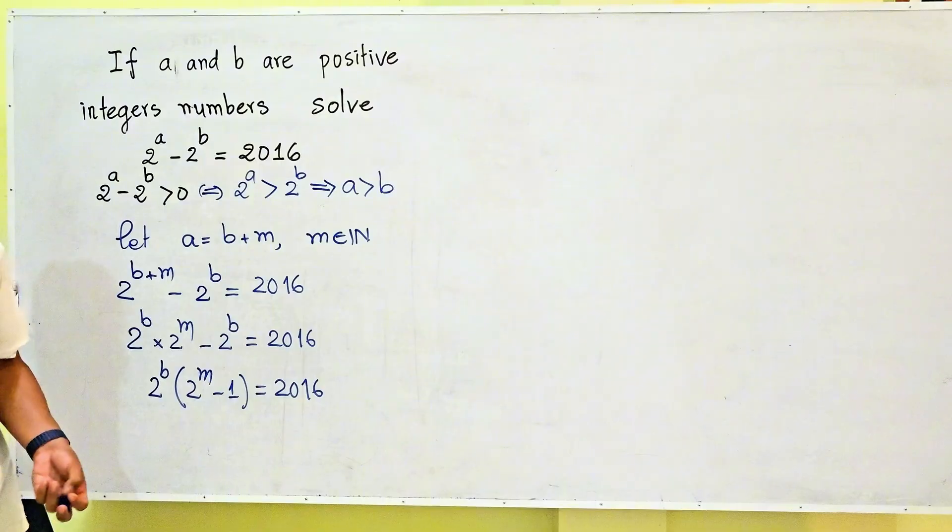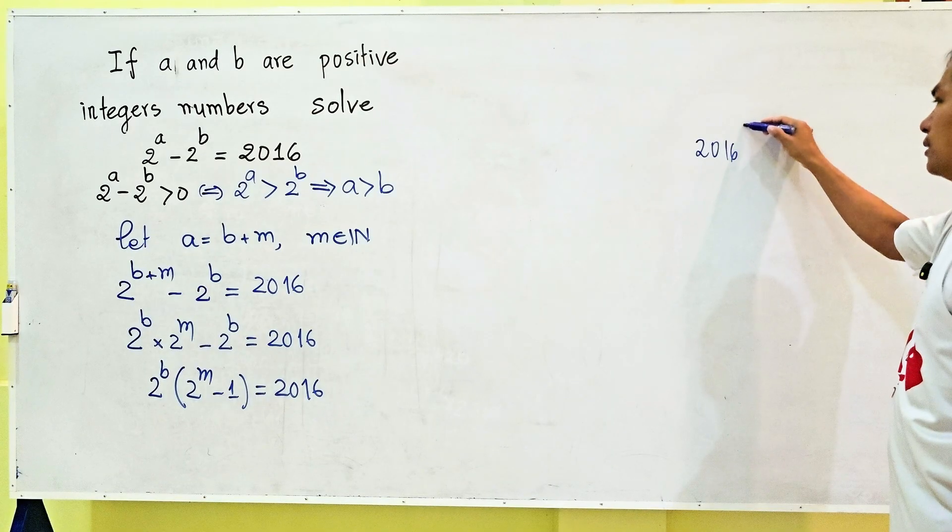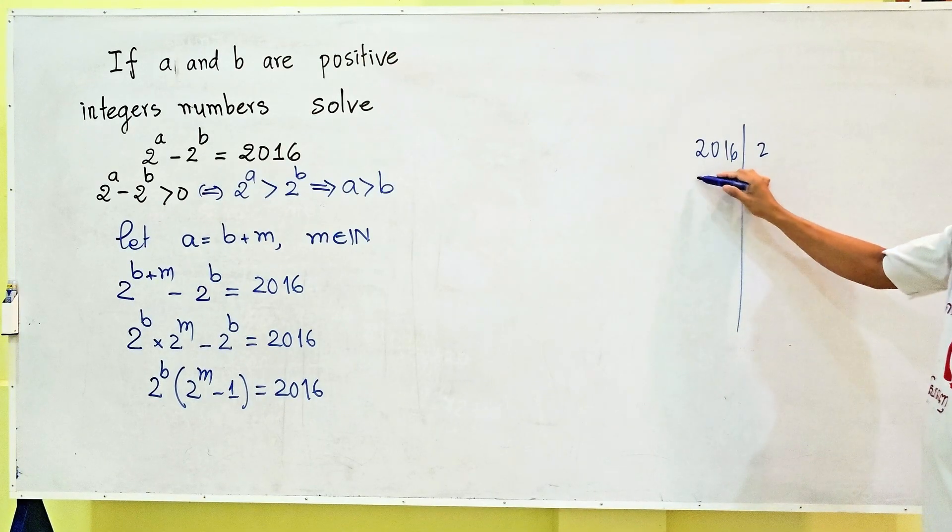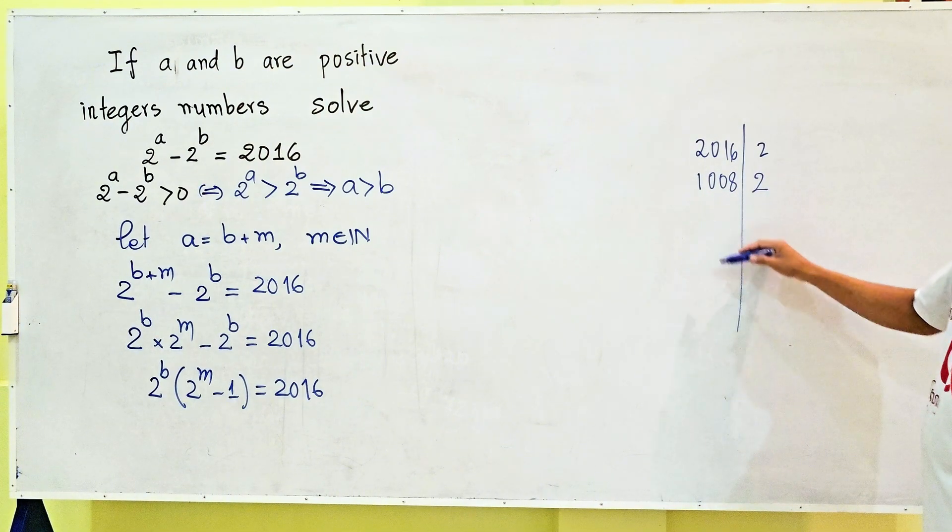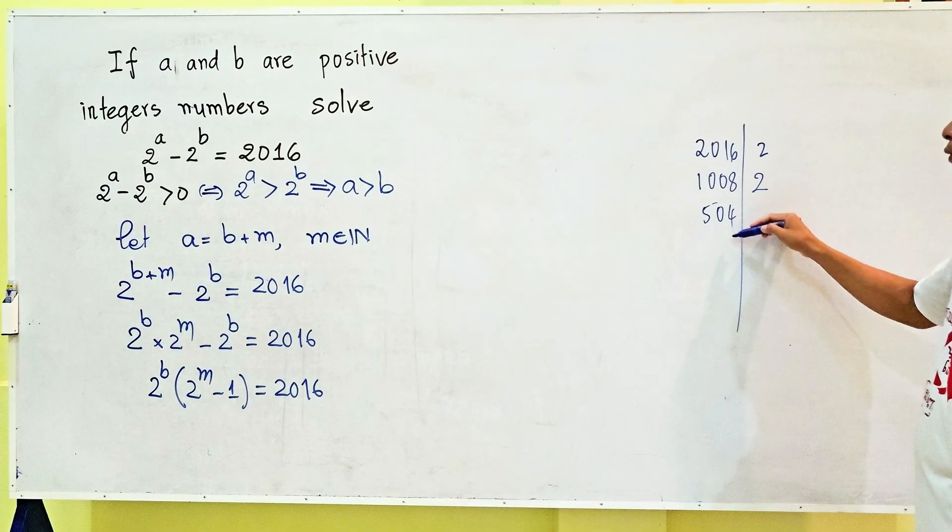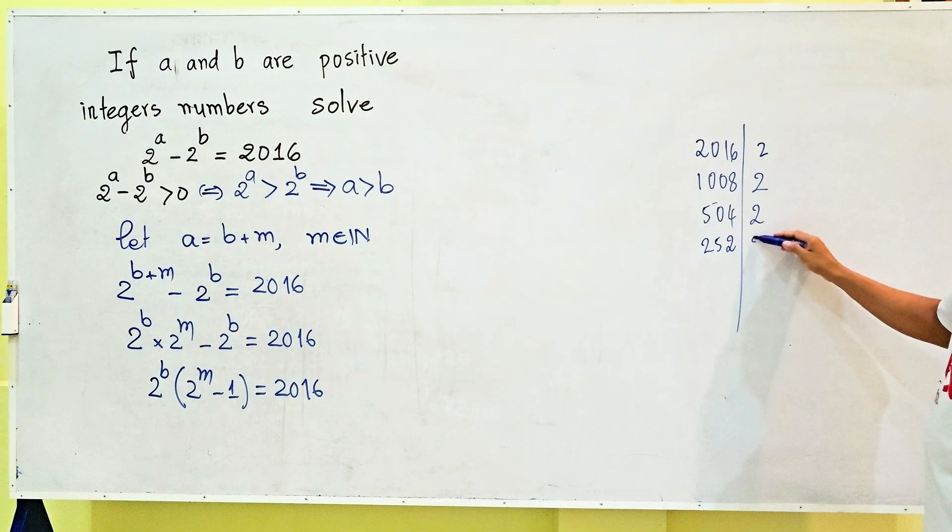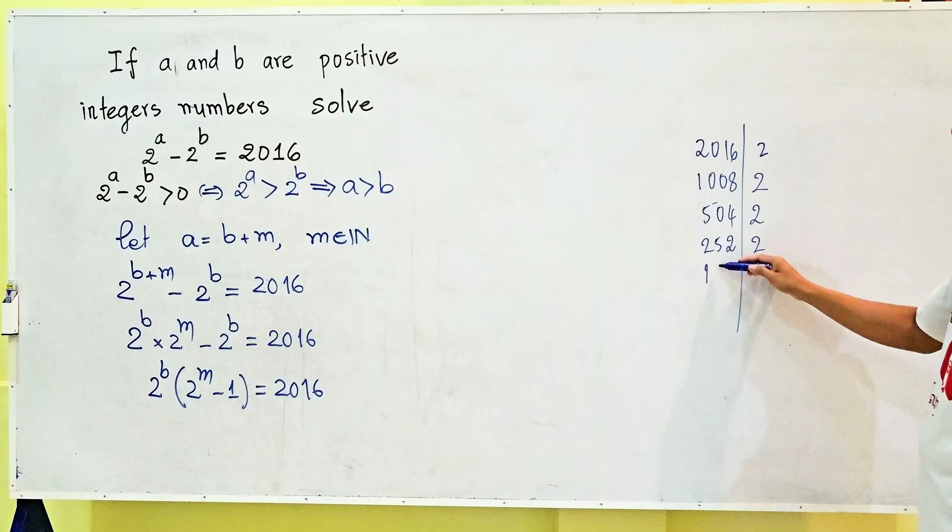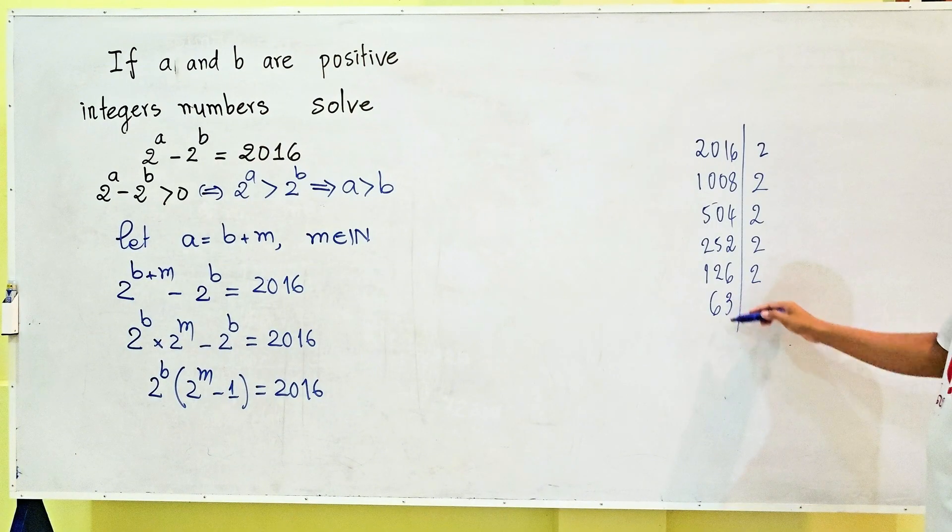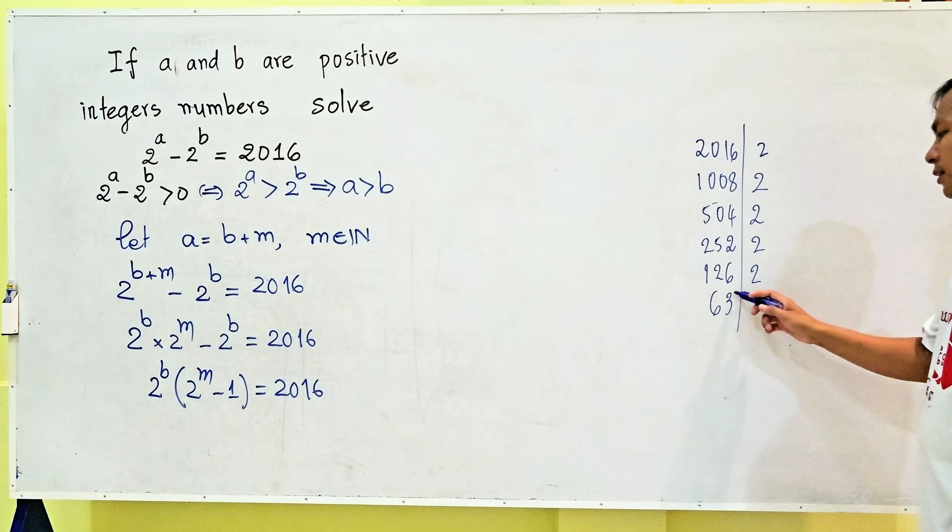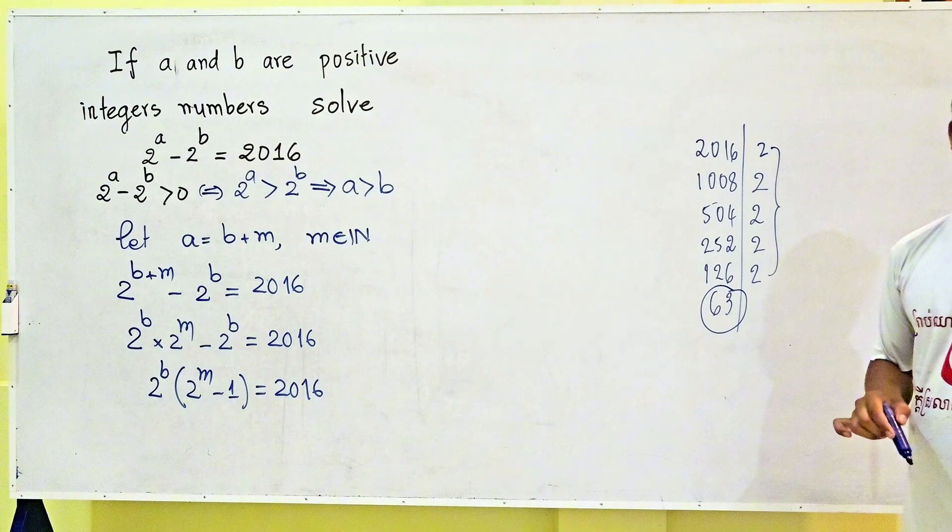Dividing 2016 by 2 repeatedly: 2016 divided by 2 is 1008, divided by 2 is 504, divided by 2 is 252, divided by 2 is 126, divided by 2 is 63. Since 63 is an odd number, we get 2016 = 2^5 × 63.